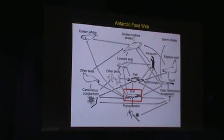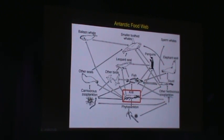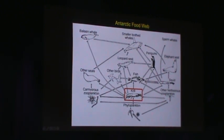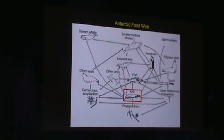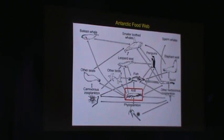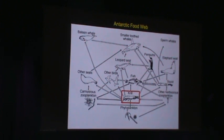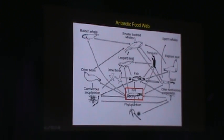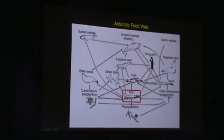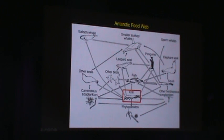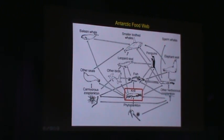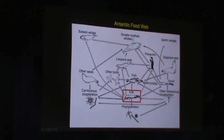Looking at the Antarctic food web, the phytoplankton — many living on the bottom of the sea ice, which is frozen sea water having nothing to do with glaciers — are consumed by the krill. The krill are the food source for many seals, birds, fish, squid, elephant seals, penguins, some baleen whales, and smaller toothed whales.